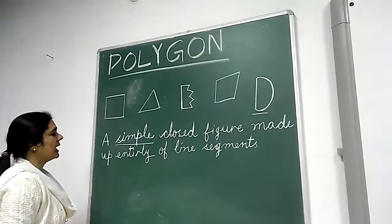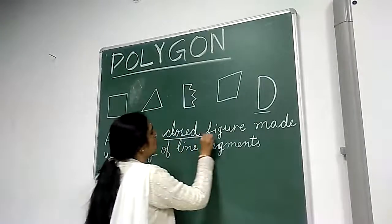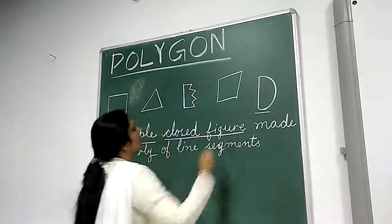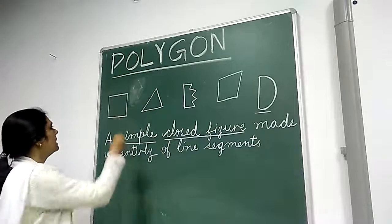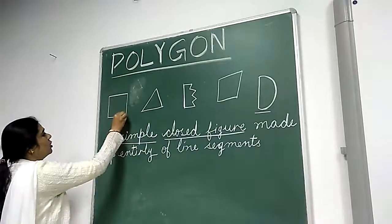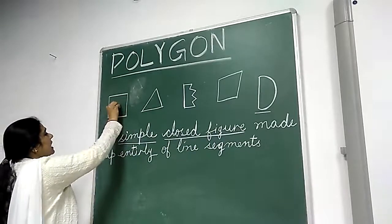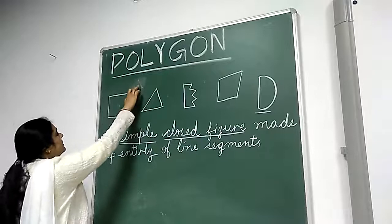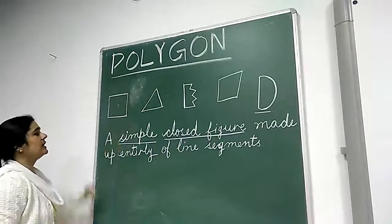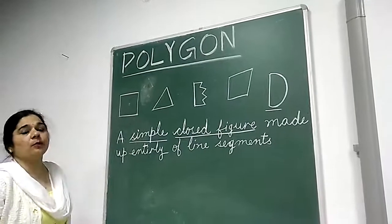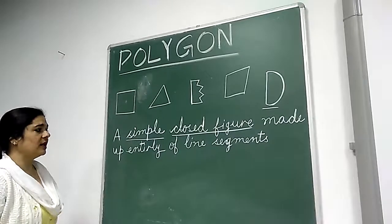Second thing is, it is a closed figure. A polygon is a closed figure. See, this is a closed figure. This area is interior. This area is exterior. So it is a closed figure — a polygon is a closed figure.